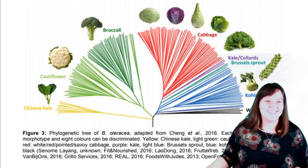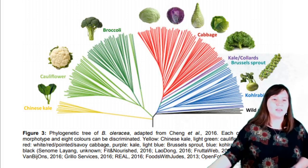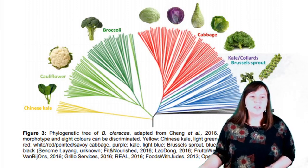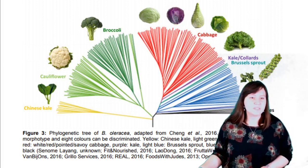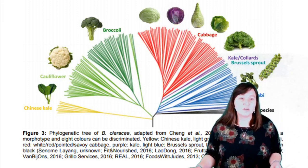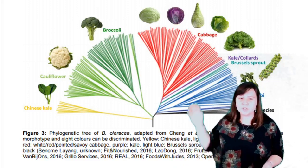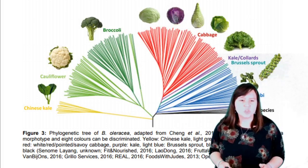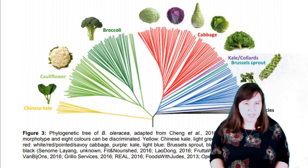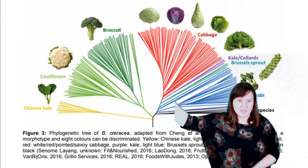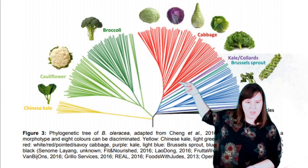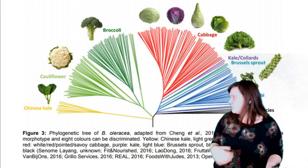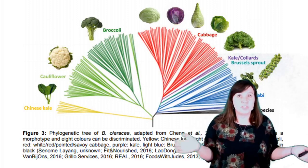This map shows all of the vegetables that stem from Brassica oleracea. Every line that comes out stands for a vegetable, and you can see there are about eight different groups on this map. Within each group there are a lot of different types — for example, the dark green lines for broccoli contain about 35 different types, which is crazy to think about.